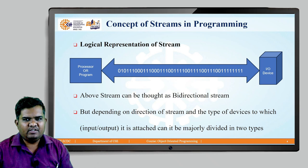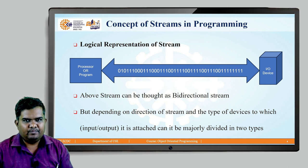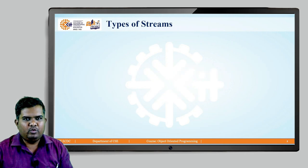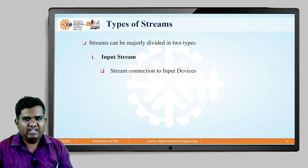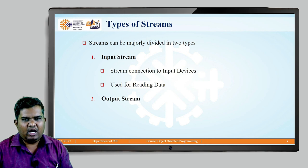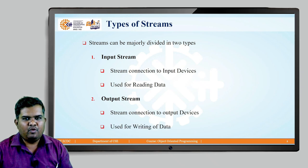Depending upon the direction of the stream, different types of streams exist in programming. Whether the stream is attached to an input or output device, it can be majorly divided into two types. The first type is called the input stream — a stream connected to input devices, used for reading data. The second type is called the output stream — a stream connected to output devices, used for writing data.